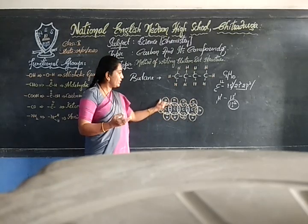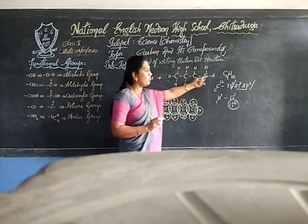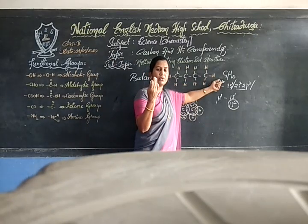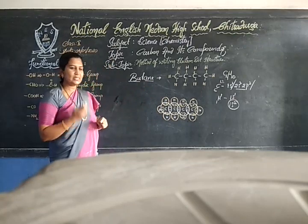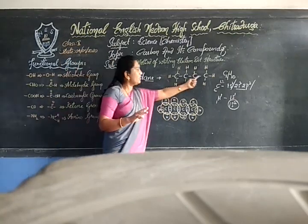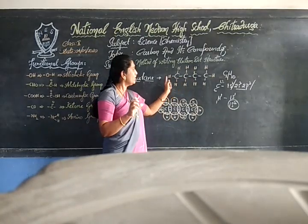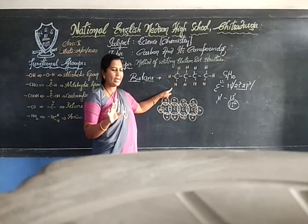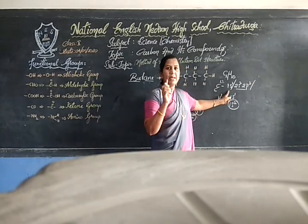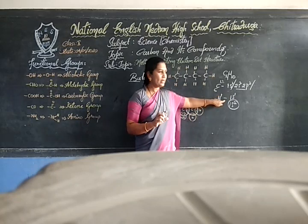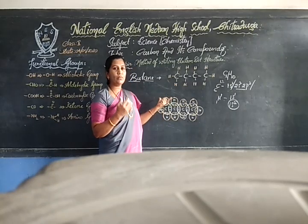So this is how we follow step by step to write the electron dot structure. When given any compound, first write down the molecular formula. If you don't know the molecular formula, go for the skeletal structure by following the prefix and suffix rules. For butane, the prefix 'but-' means four carbons and the suffix '-ane' means saturated hydrocarbon with all single C-C bonds. Then satisfy the hydrogens, write the basic structure, determine the valence electrons, and then write the electron dot structure.